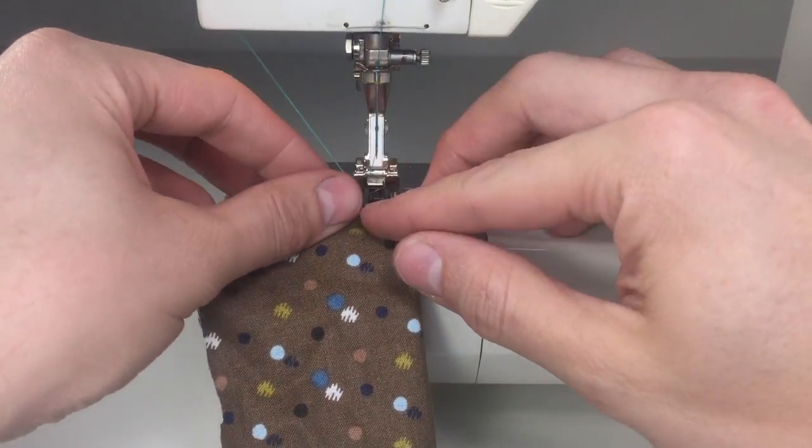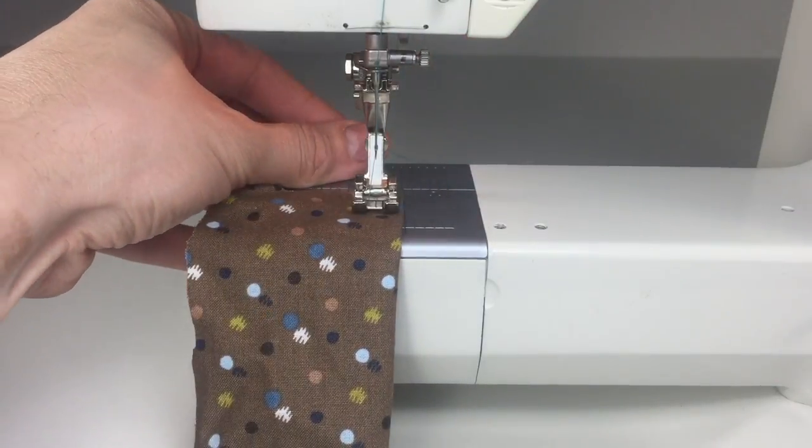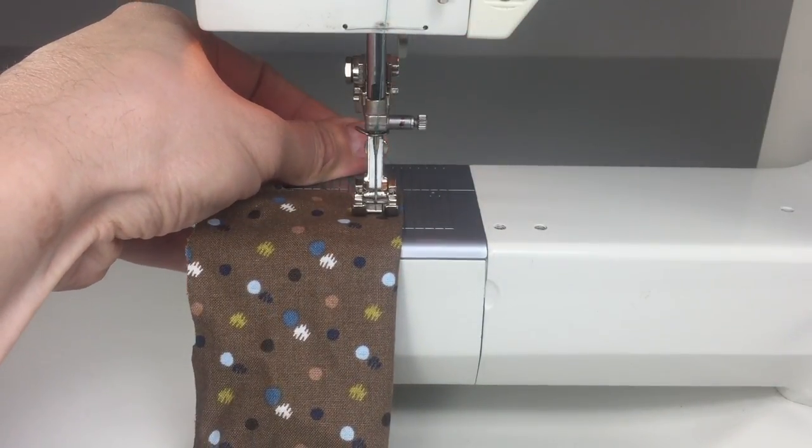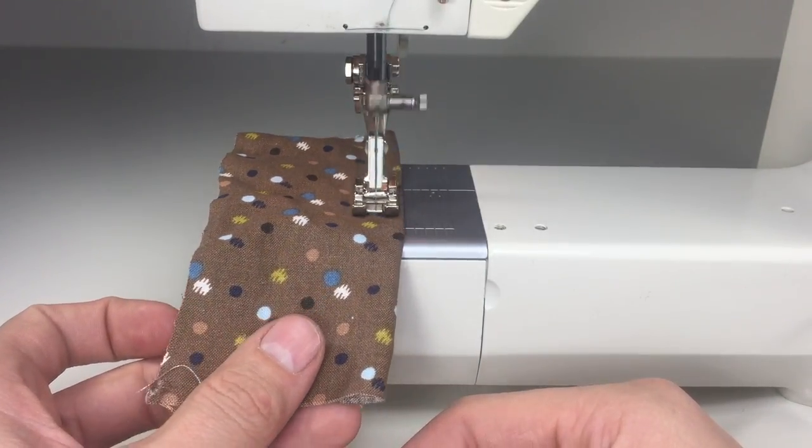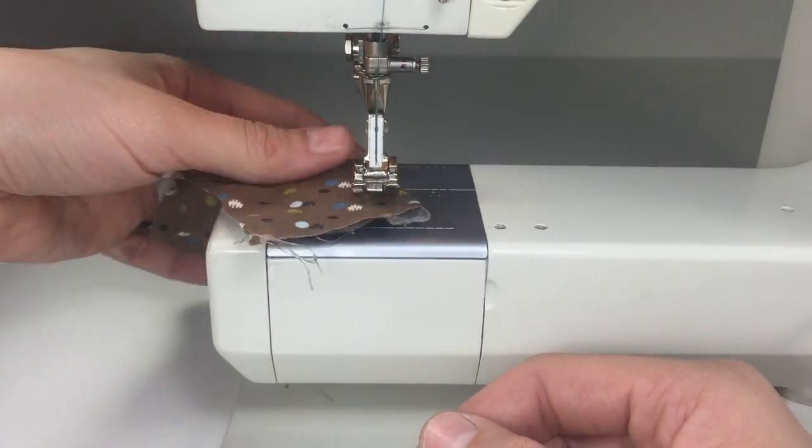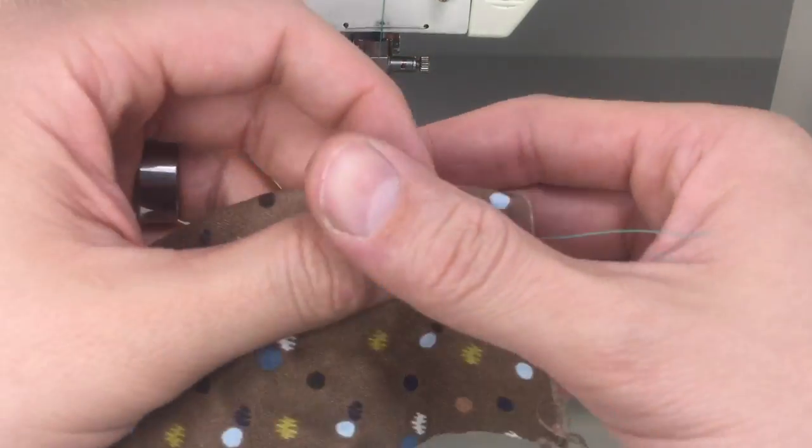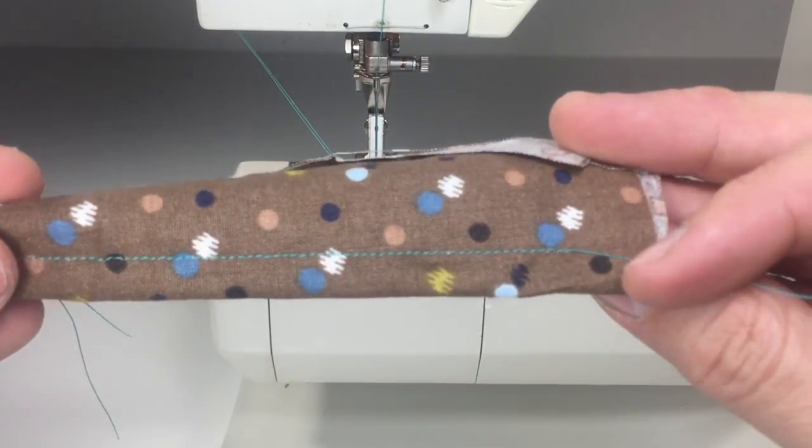For a test strip, I'm just going to take two layers of material and start with a straight stitch. This is going to give us a good baseline. If there's loops on the bottom, it's an indication that our top threading is either incorrect or our tension is set too low.